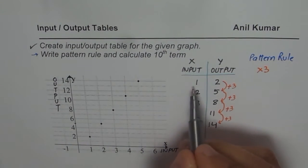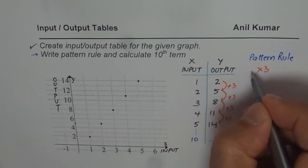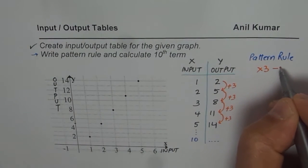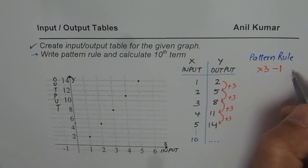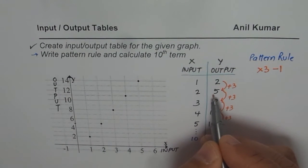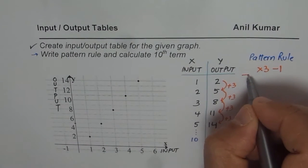Now, if I do 1 times 3, what do I get? 1 times, let's calculate. 1 times 3 is 3. How do you get 2? Well, I have to remove 1. What is 2 times 3? 2 times 3 is 6, and if I remove 1, I get 5. It works. So that is the pattern rule.